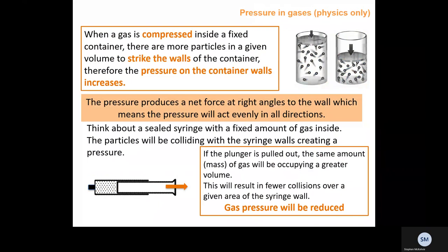When a gas is compressed inside a fixed container, there are more particles in a given volume to strike the walls, so pressure on the container walls increases. If you decrease the volume, there are more particles per unit volume and therefore more pressure. The pressure produces a net force at right angles to the wall, acting evenly in all directions. In a sealed syringe, if you pull out the plunger, the same amount of gas occupies a greater volume, resulting in fewer collisions against the walls and therefore reduced gas pressure.